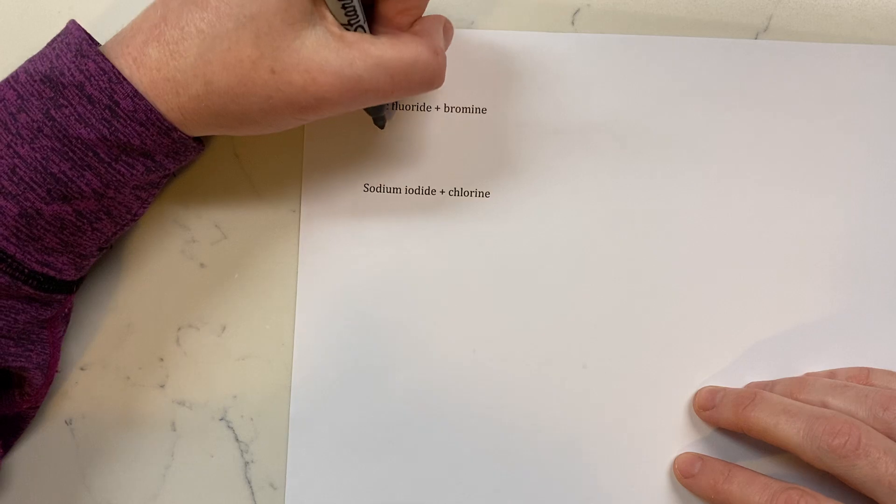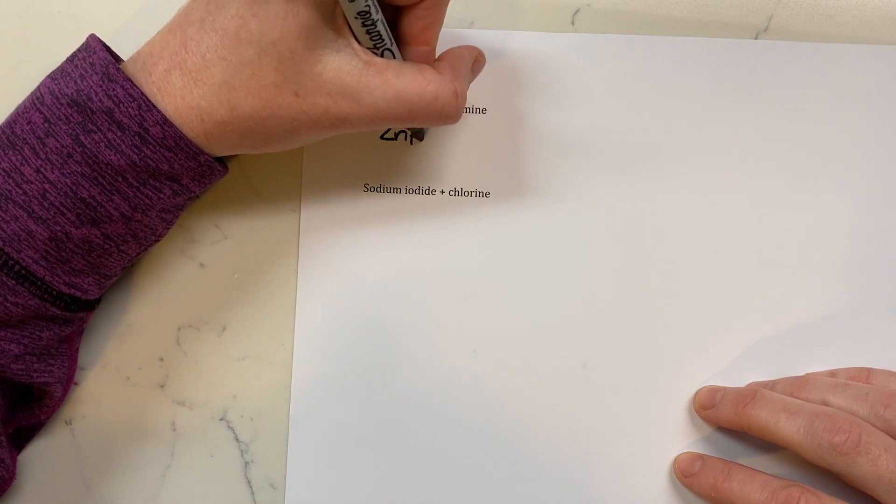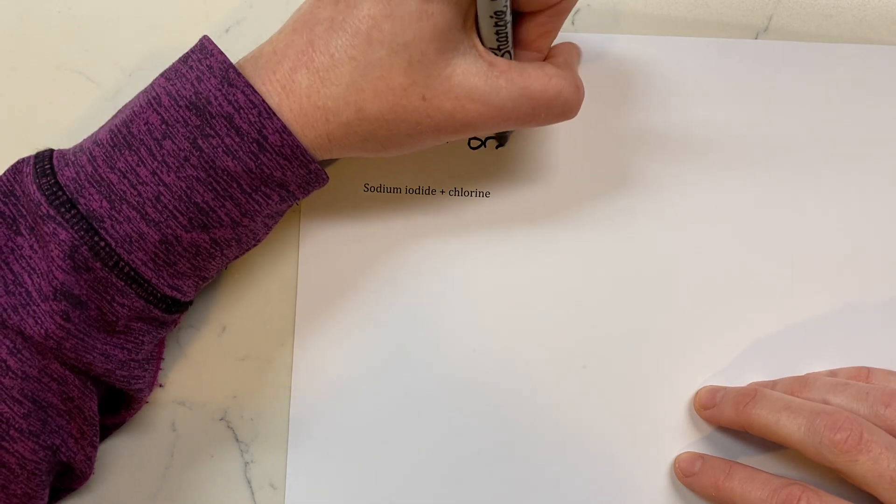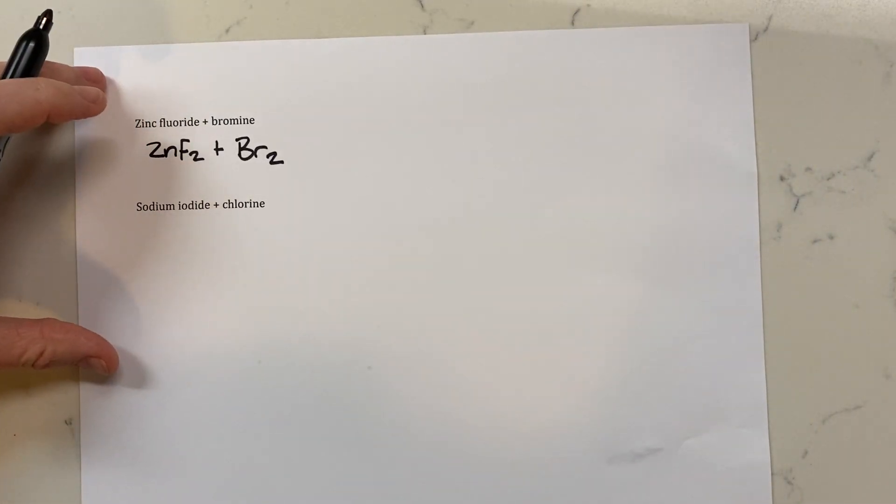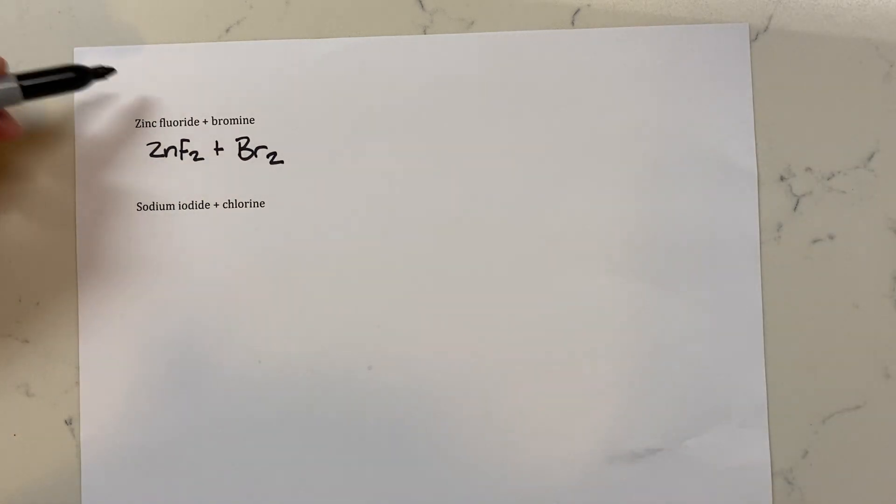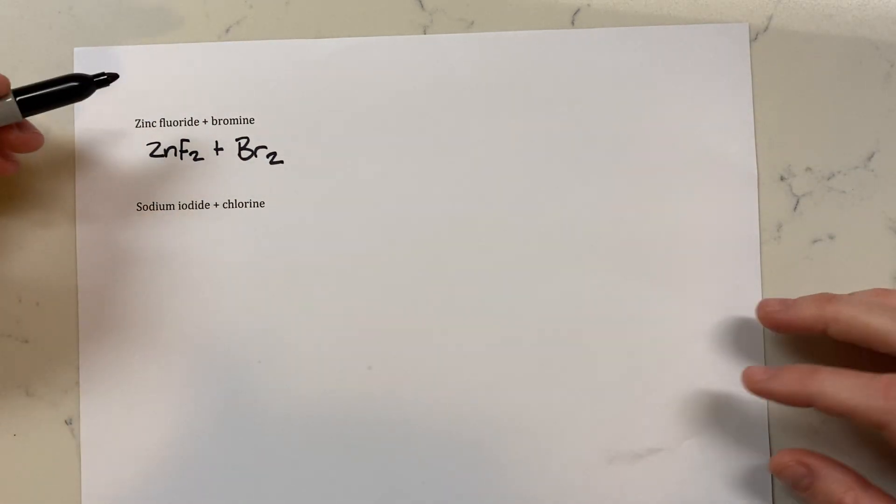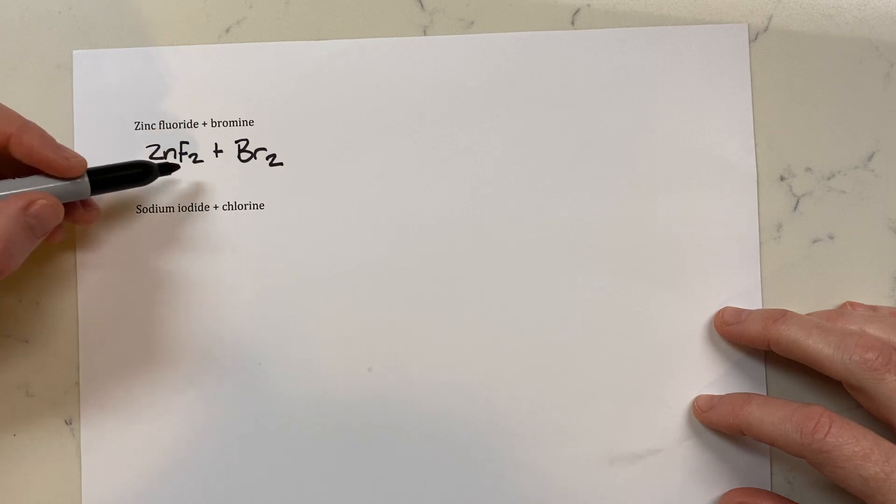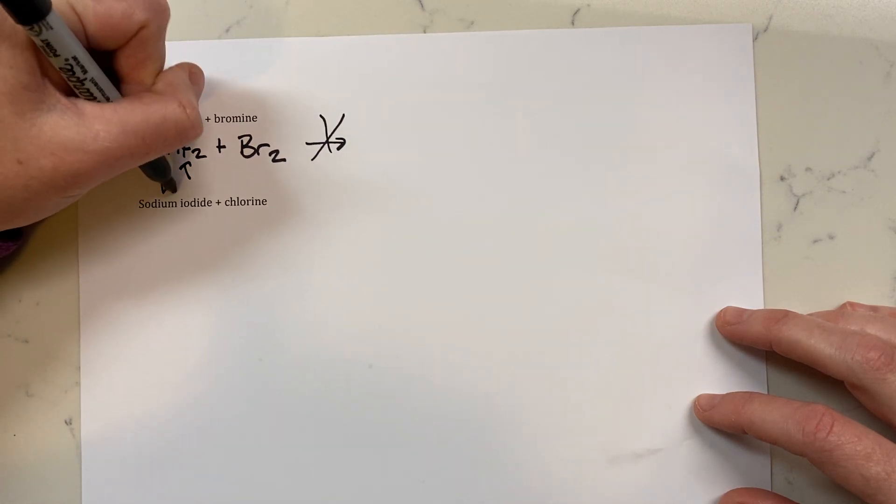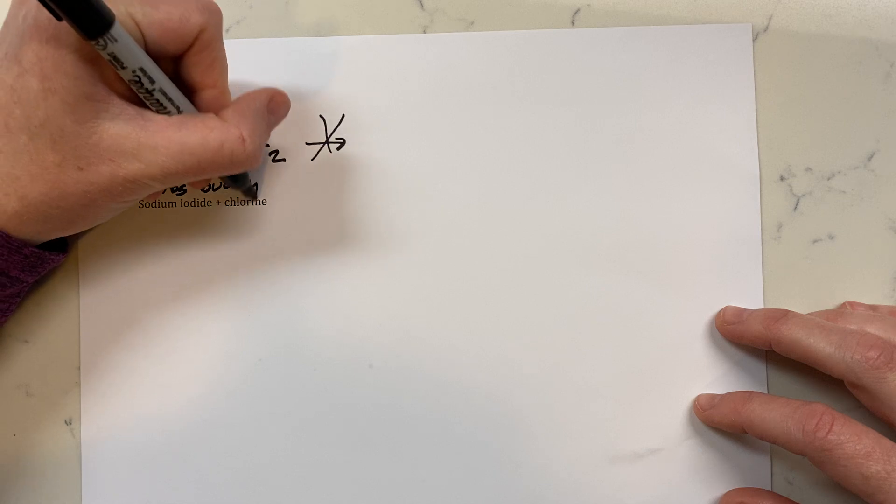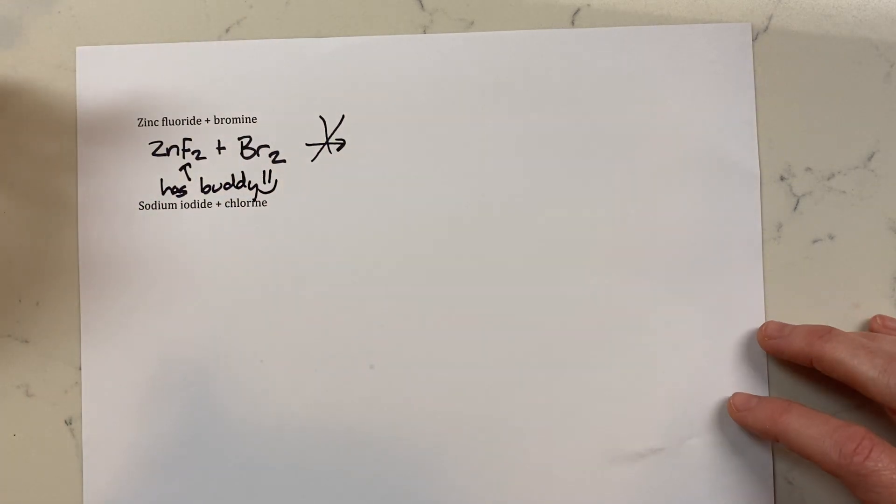I think I have a few more random examples for you. Here we have zinc fluoride and bromine. Zinc fluoride, ZnF2, and bromine is a diatomic, it's a liquid, it'd be Br2. And so freaking Claire brought ice. What's higher on the list? Fluorine's higher on the list. Fluorine already has a buddy, right? So will this reaction even occur? It won't occur. Already has buddy. It's already super happy.